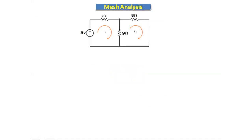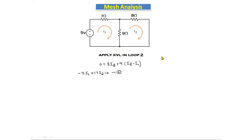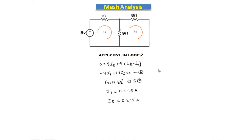Applying KVL in loop two: since there is no source, we get 0 = 8·I2 + 9·(I2 - I1). For the 9 ohm resistor two currents are flowing. Simplifying: -9·I1 + 17·I2 = 0. This is equation number two.